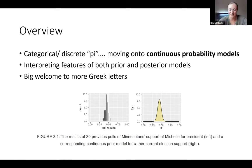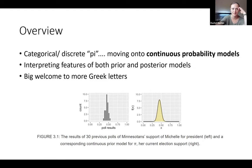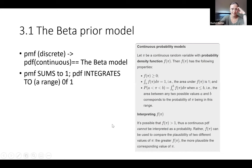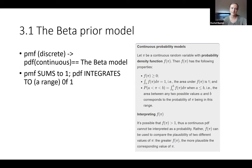The example we'll be following through the rest of this chapter is Michelle — she's running for president and looking at supporters in Minnesota. This is our prior that we want to fit our beta model to, if I'm understanding correctly. We were working with probability mass functions and now we're working with probability density functions, moving from discrete to continuous. Instead of summing probabilities to one, it's now a range from zero to one.